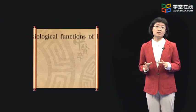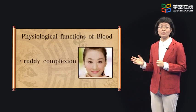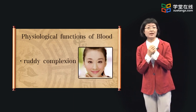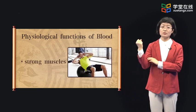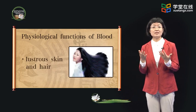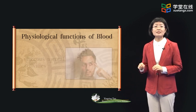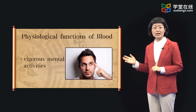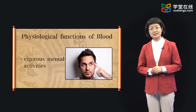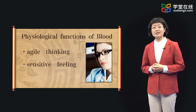The main functions of blood include: first, blood nourishes and moistens the whole body, signified by a ruddy complexion, strong muscles, lustrous skin and hair, as well as nimble and flexible sensation. Second, blood is the basic material of mental activities, signified by vigorous mental activities, clear consciousness, agile thinking, and sensitive feeling.